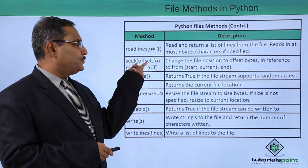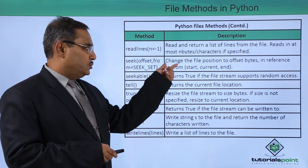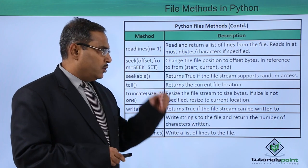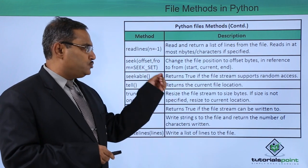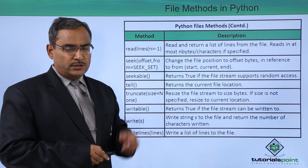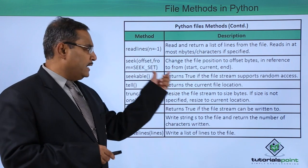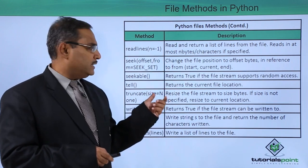Then we are having seek offset from equals seek underscore set. Change the file position to offset bytes in reference to from - there is start, current and end. The file pointer will have some movement, will have some progress depending upon the parameters whatever we have passed.